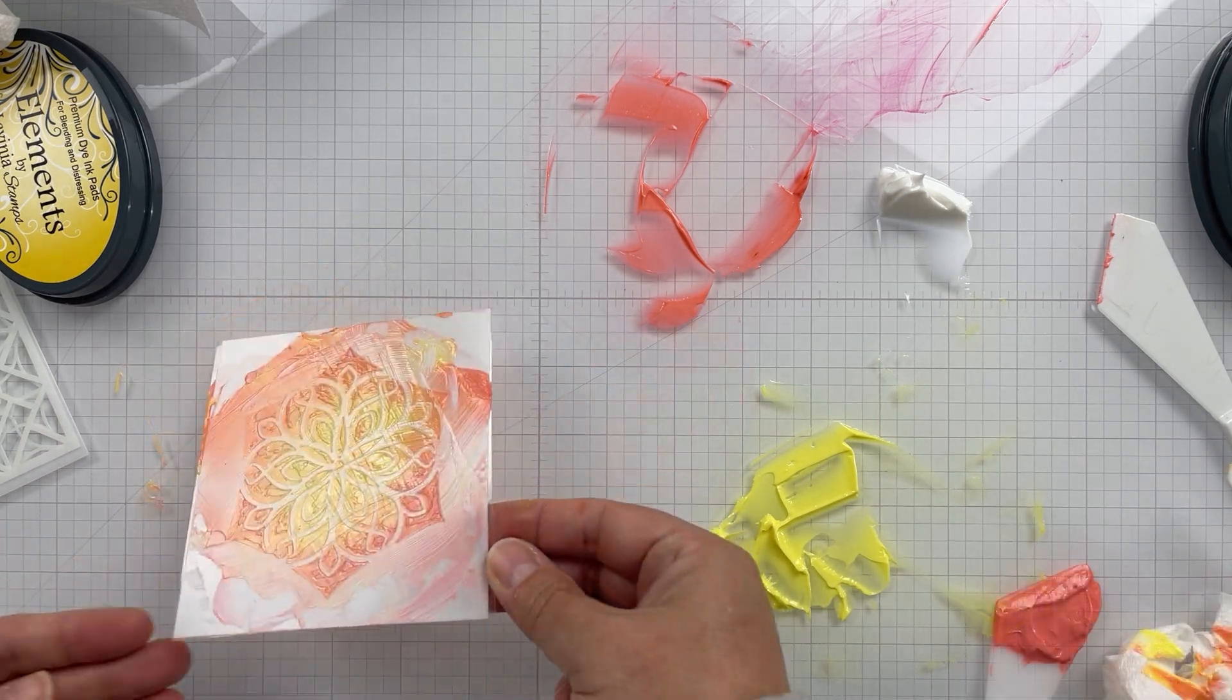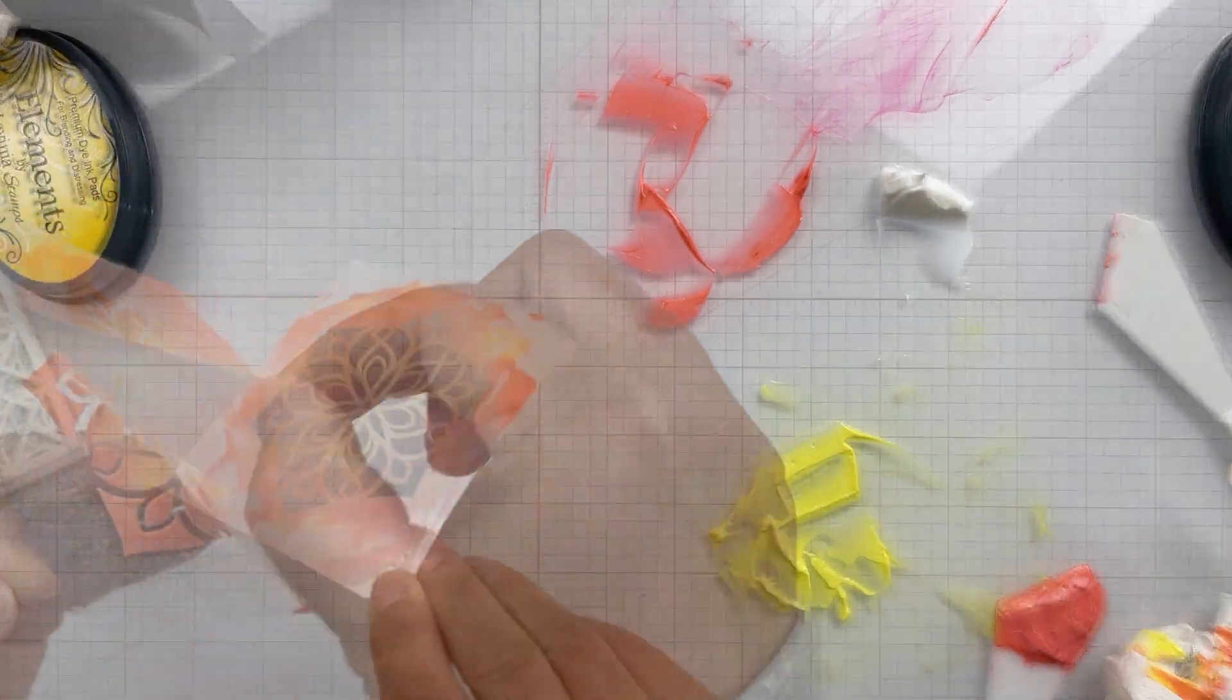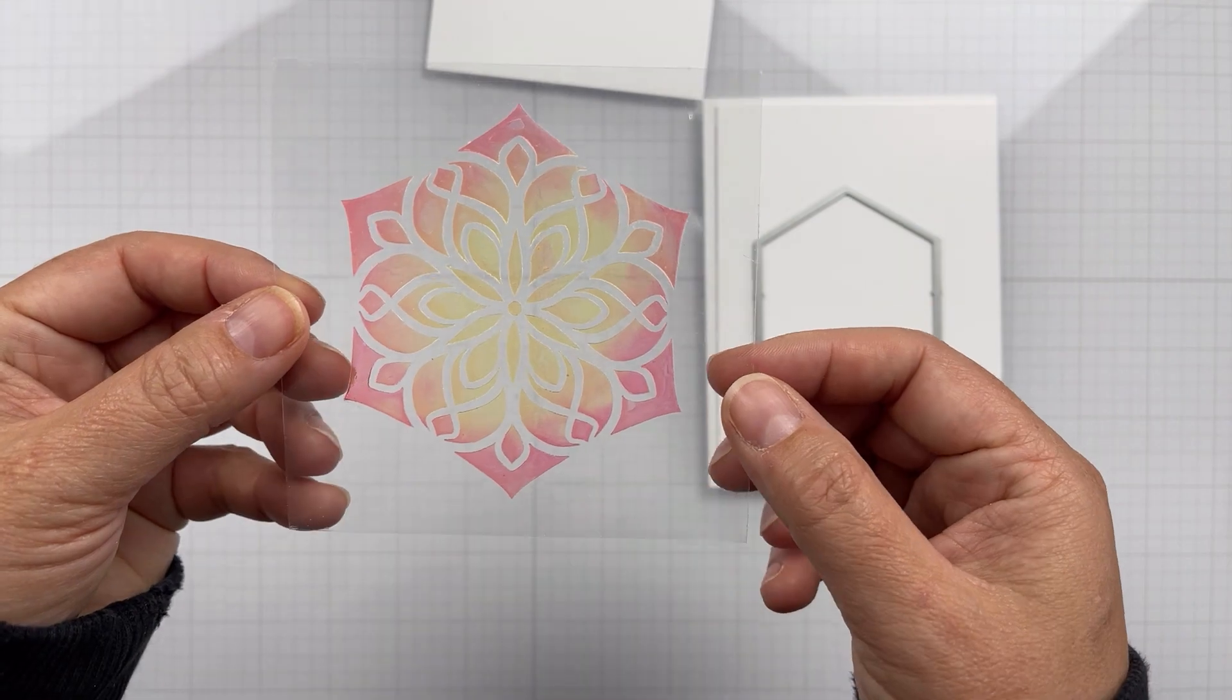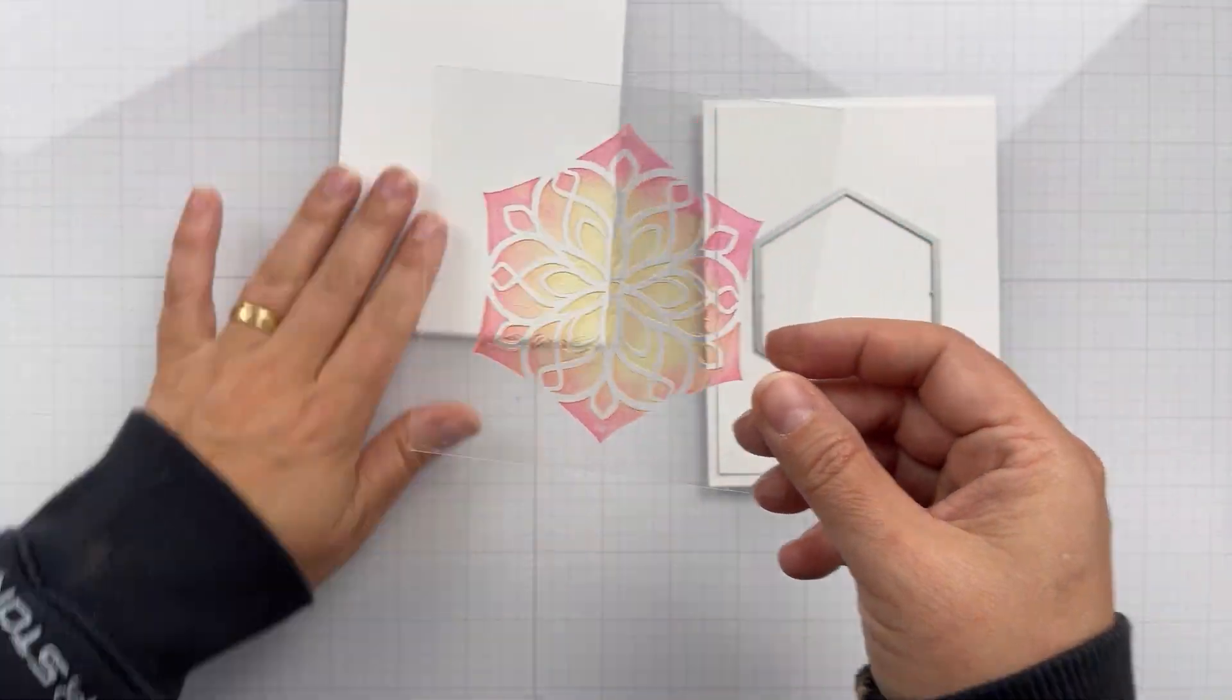So here's the reveal. If you want it to be opaque like that, use a paste. Use something that says that it dries opaque.